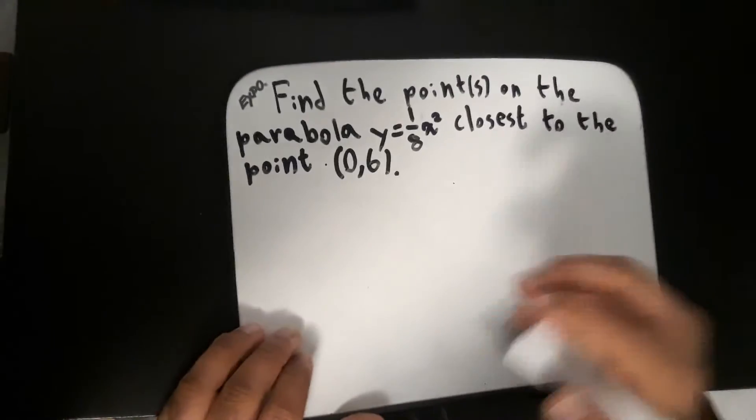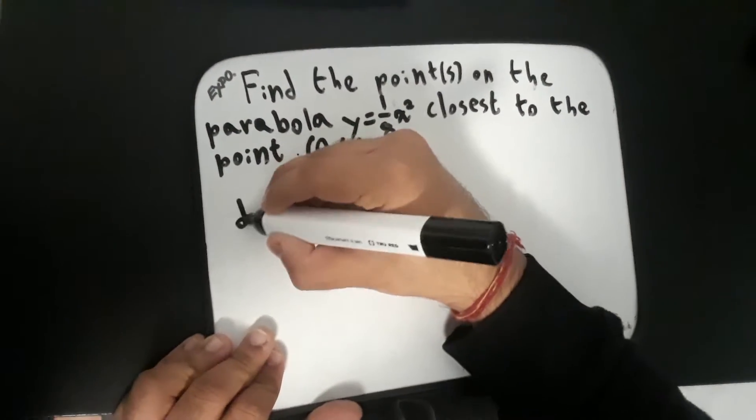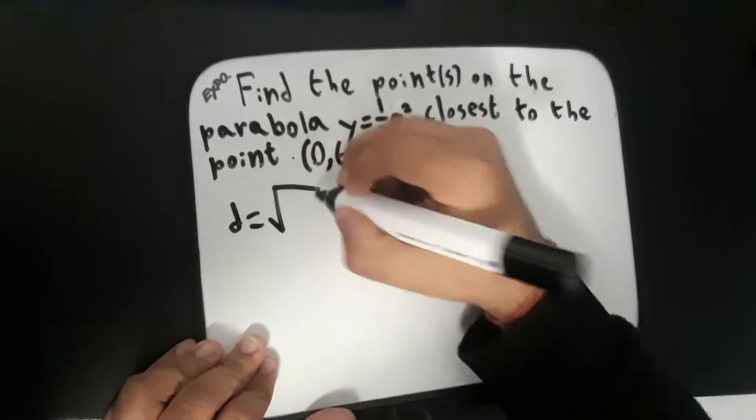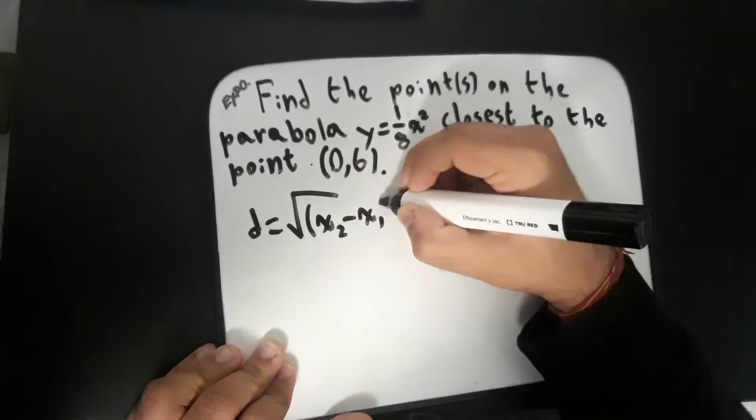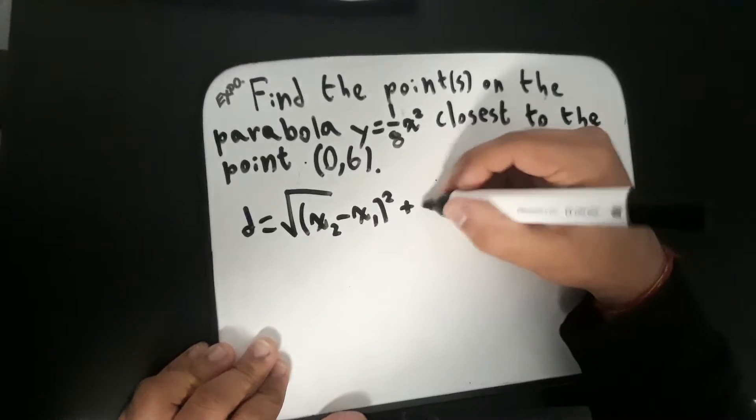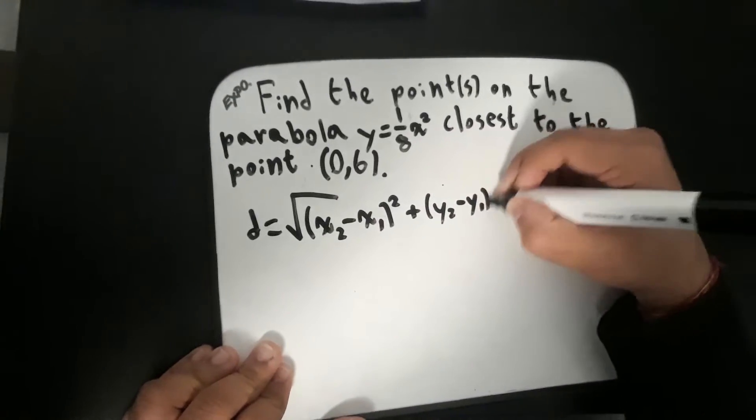Well, to do this, we obviously need to use the distance formula, which is d equals the square root of (x2 minus x1) squared plus (y2 minus y1) squared.